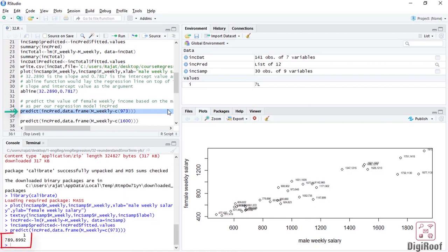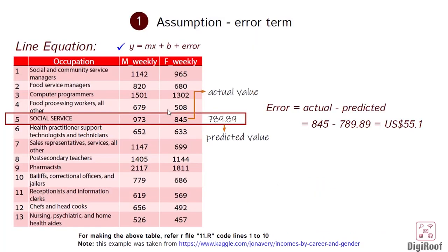Based on the model, the predicted female weekly salary is coming at US$789. So there is roughly a difference of $55 between the actual value of the response and the predicted value of response as per the regression model. This difference is known as the error.